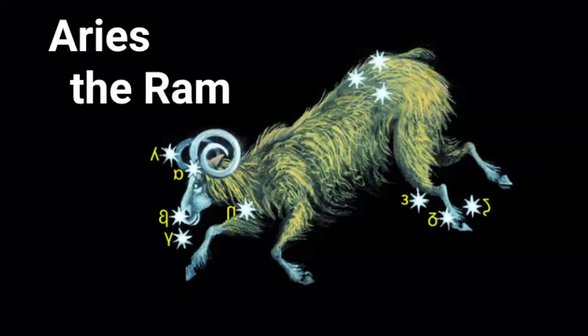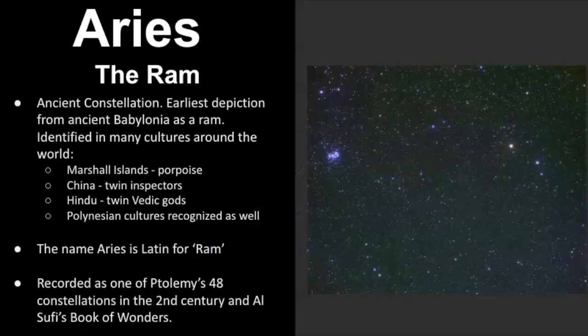Aries is classified as an ancient constellation and it's often represented as a ram. However, there are many other cultures around the world that see this star pattern as something a little different and something that matches their own myths and legends. In the world of astronomy, Aries is classified as a zodiacal constellation because the sun passes through its boundaries.